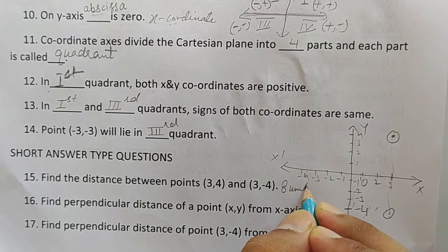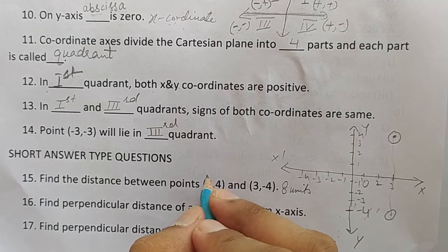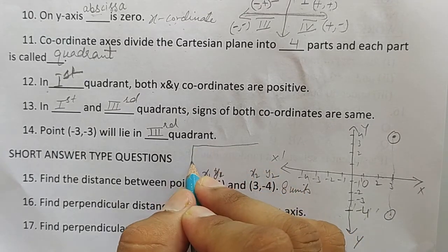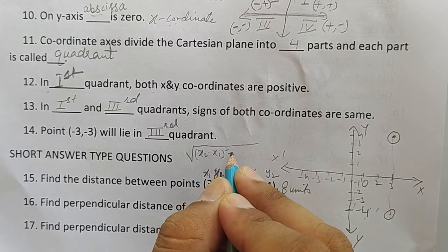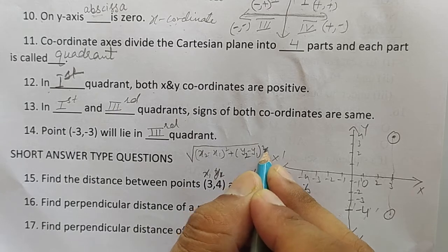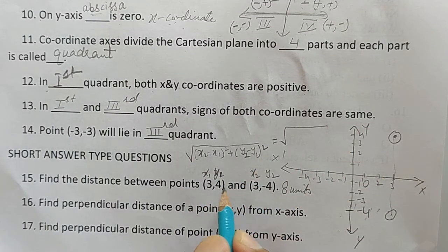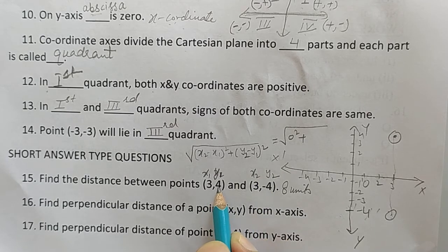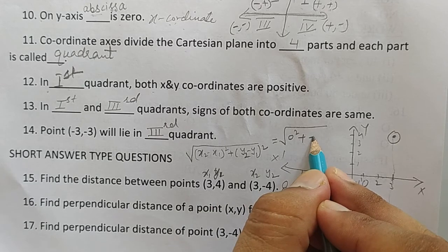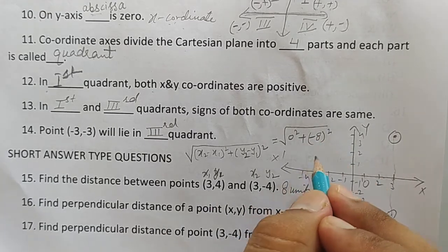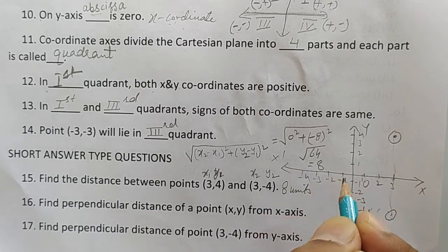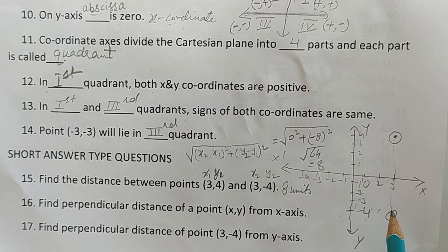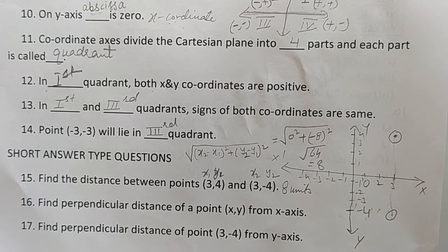Using the 10th standard distance formula: distance = √[(x₂−x₁)² + (y₂−y₁)²]. Here x₁=3, y₁=4, x₂=3, y₂=−4. So: √[(3−3)² + (−4−4)²] = √[0 + (−8)²] = √64 = 8 units. Both methods give the same answer.